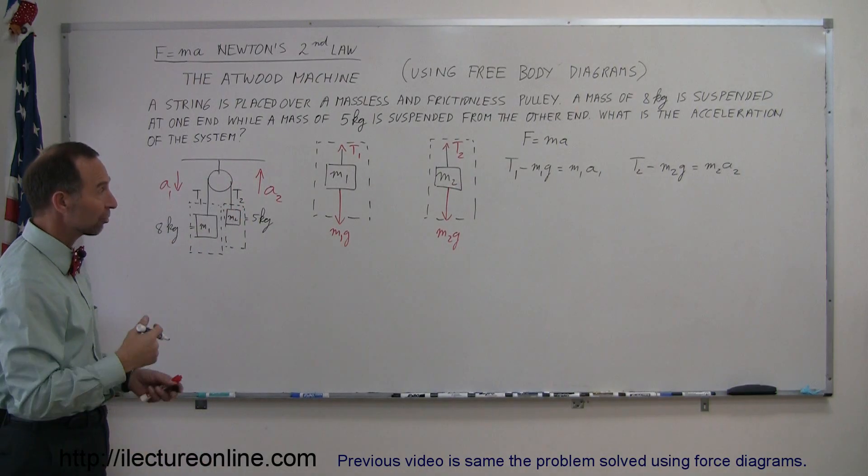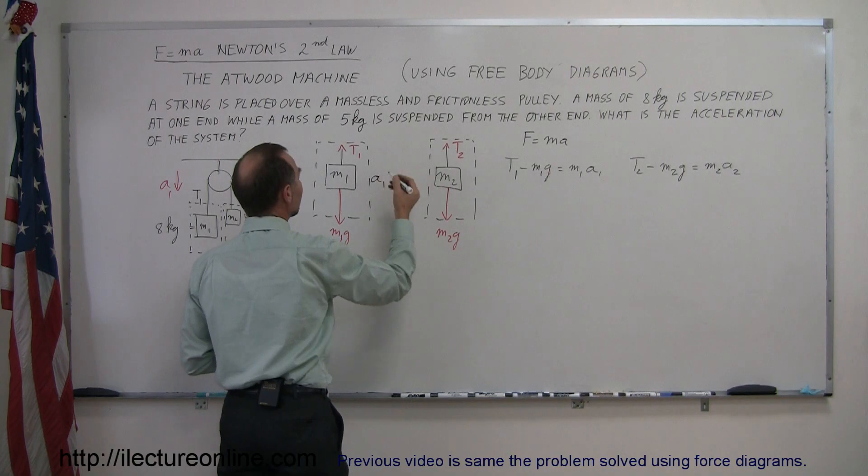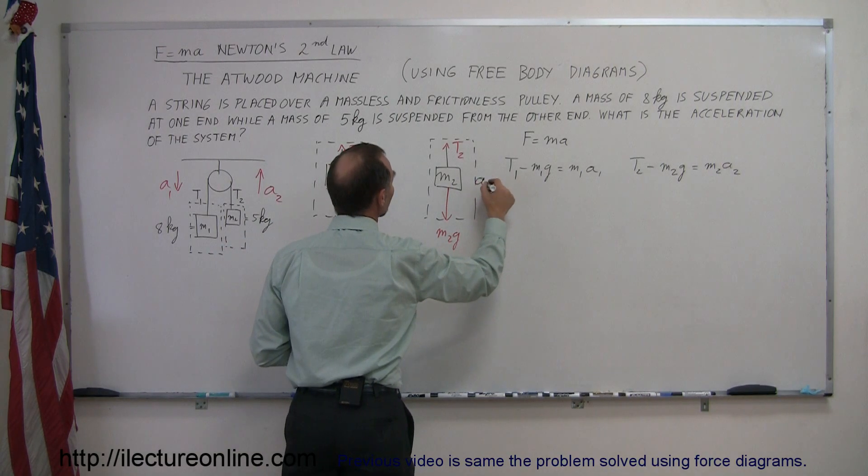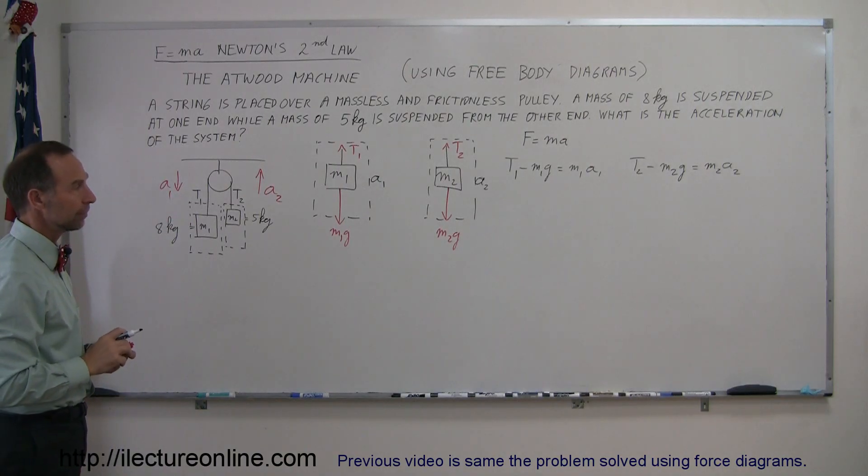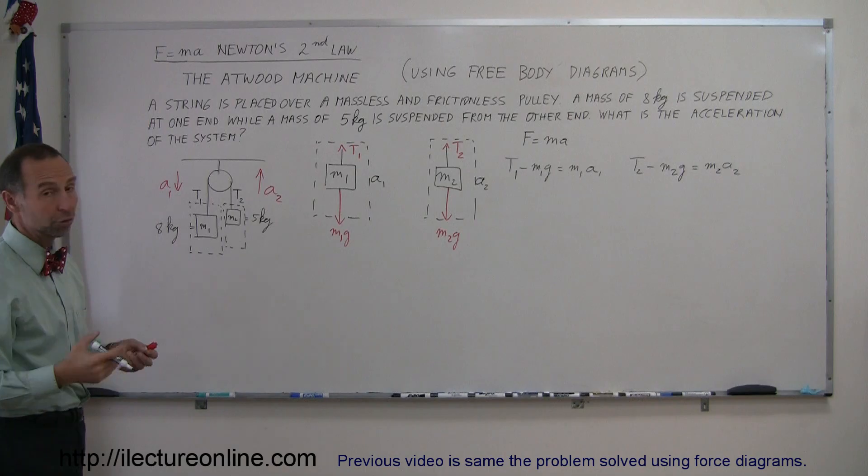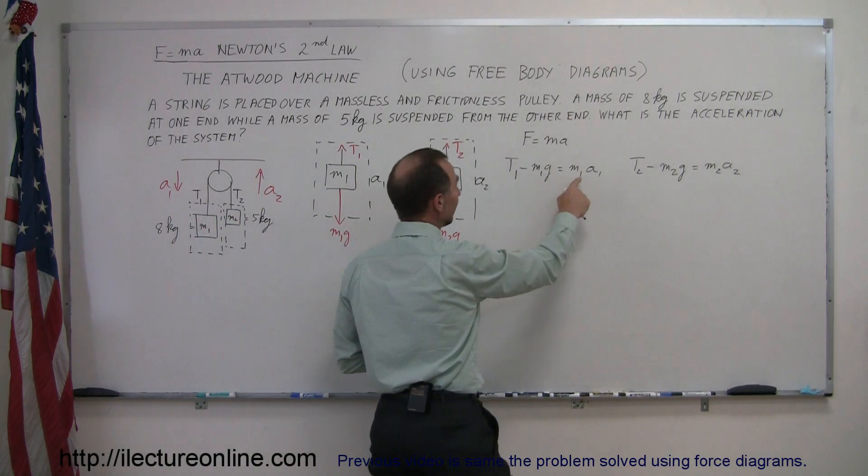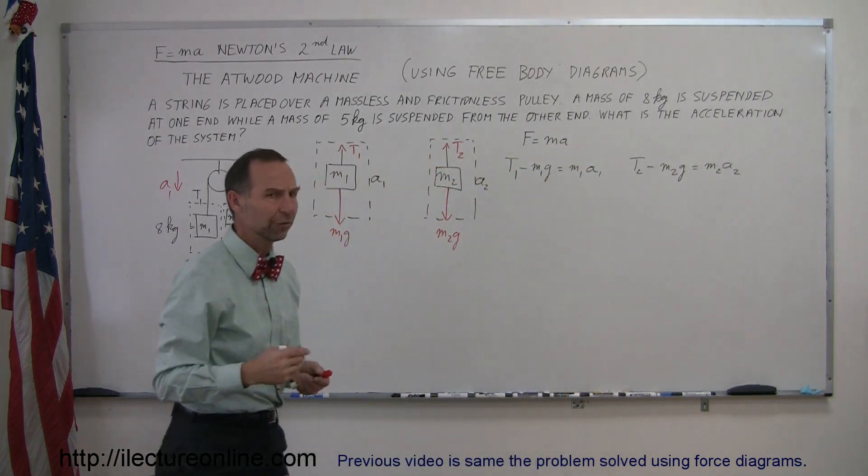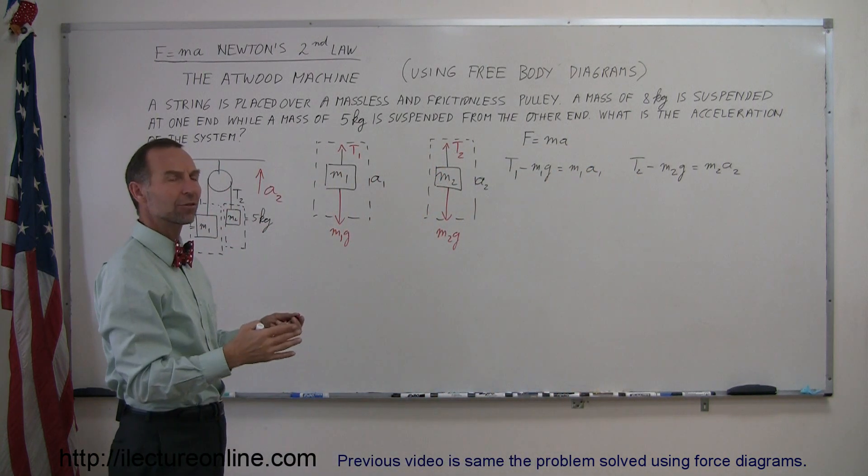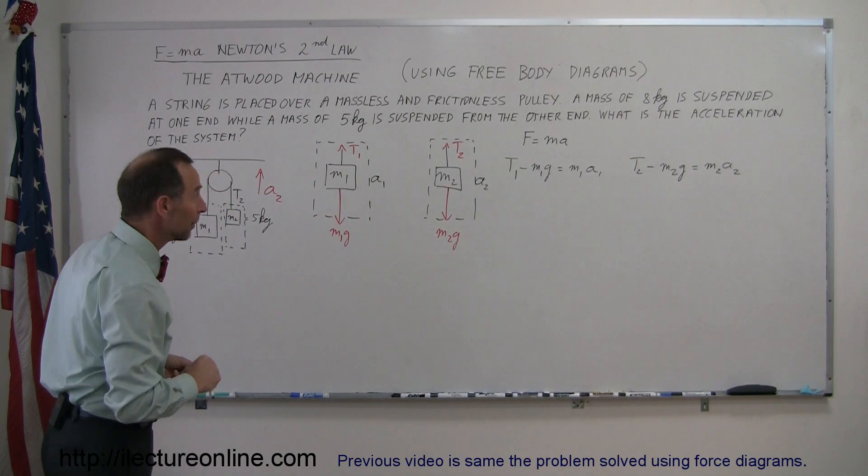Now we have to solve for the accelerations and the tensions. We have four unknowns: tension 1, A1, tension 2, and A2. That's four unknowns and we only have two equations. Obviously, with two equations and four unknowns, you could normally not solve that. But then we realize something important.